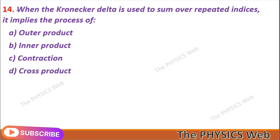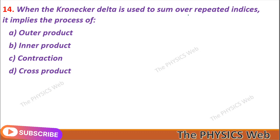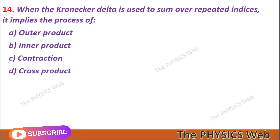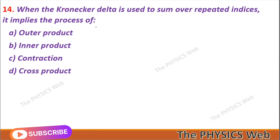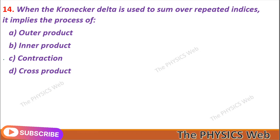Question 14: When the Kronecker delta is used to sum over repeated indices, it implies the process of contraction — so C is your correct option.